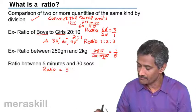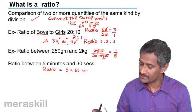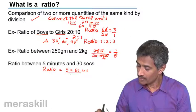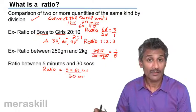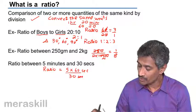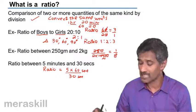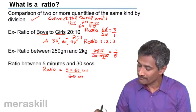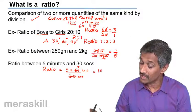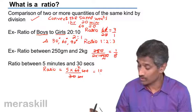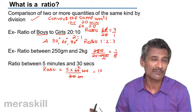It's going to be 5 minutes converted to seconds — 5 into 60 seconds — upon 30 seconds. There will be no units in the final ratio because the final ratio doesn't have any units. So you have 300 divided by 30, which gives 10.